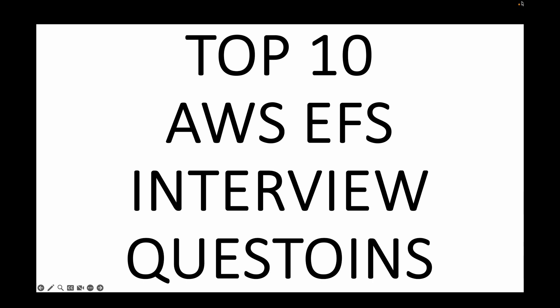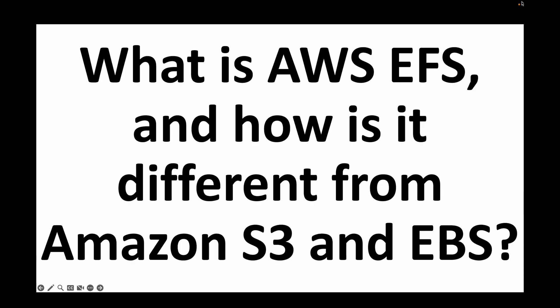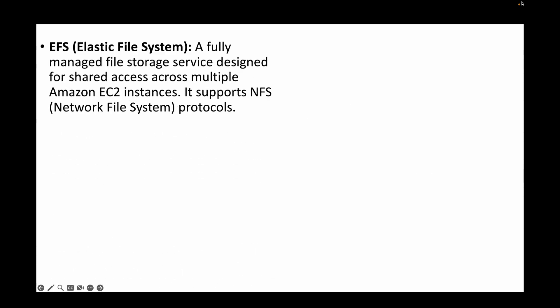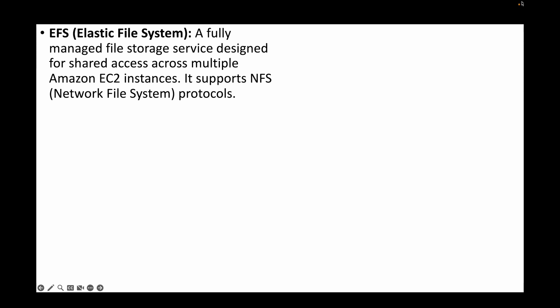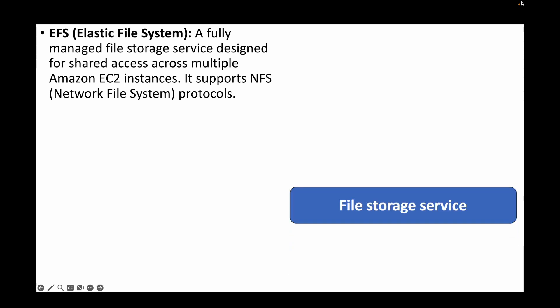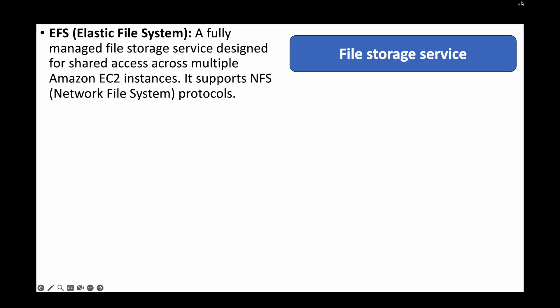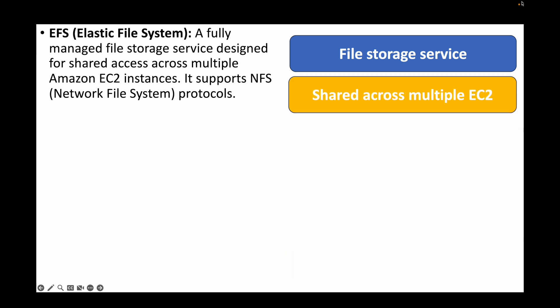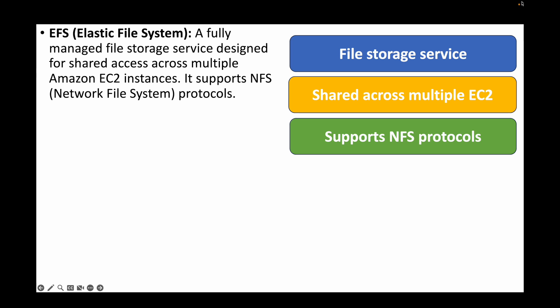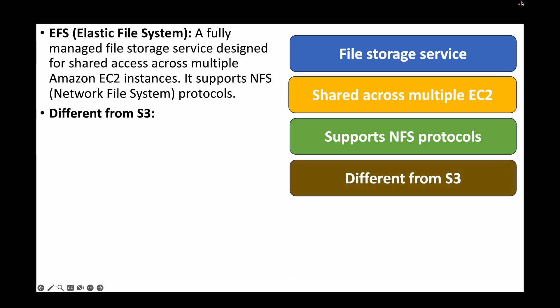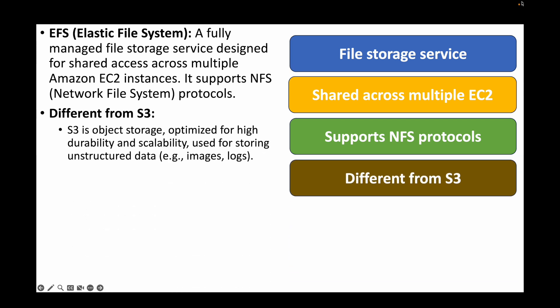The first question is: what is AWS EFS and how is it different from Amazon S3 and EBS volumes? EFS stands for Elastic File System and it is a fully managed service provided by AWS. We can use this to share storage across multiple EC2 instances — that's the whole point of EFS. It supports the NFS protocol, which is your Network File System, so the storage sharing is done at the network layer.